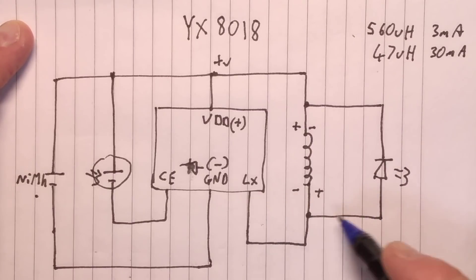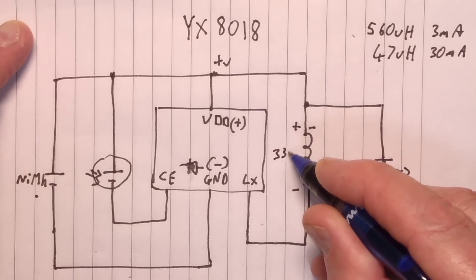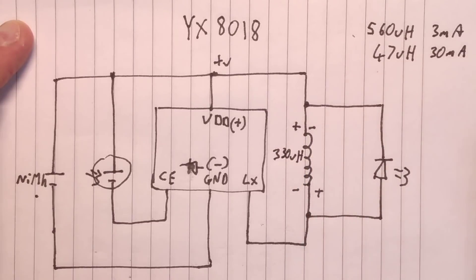But this is 330 in this instance, let's write that in, 330 microhenry, which I'd guess is probably in the region of somewhere just below 10 milliamps, say 5 milliamps perhaps.